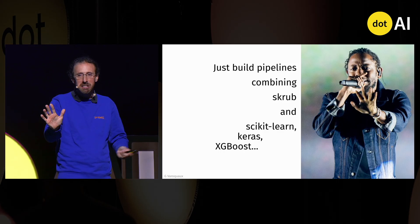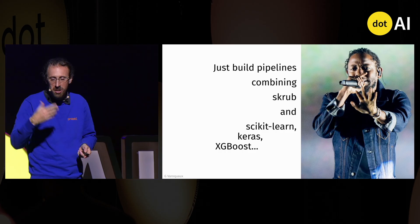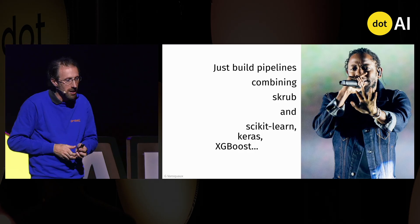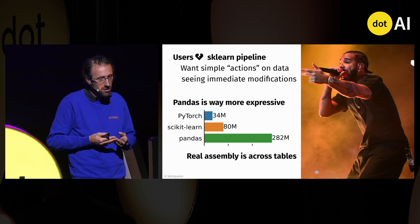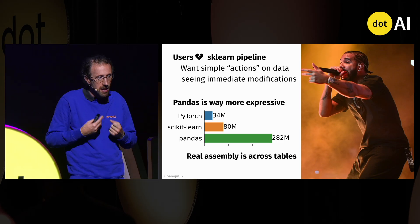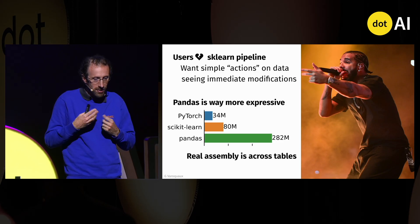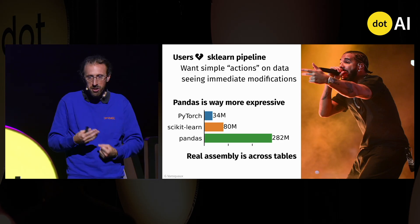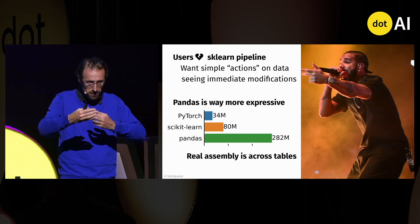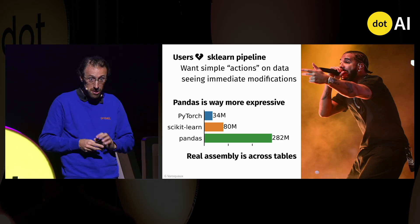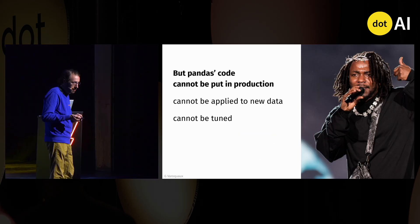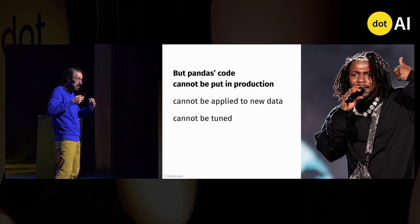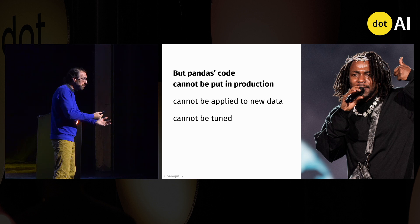You just need to build pipelines combining Skrub and machine learning — whether it's scikit-learn, Keras, or others. However, users don't really like scikit-learn pipelines because they want simple actions on data where they can see the immediate modifications. I work in a very interactive way, building transformations as I go. Pandas is way more expressive than scikit-learn pipelines, but Pandas code cannot be put in production because it cannot be reapplied to new data without things changing, and it cannot be tuned.